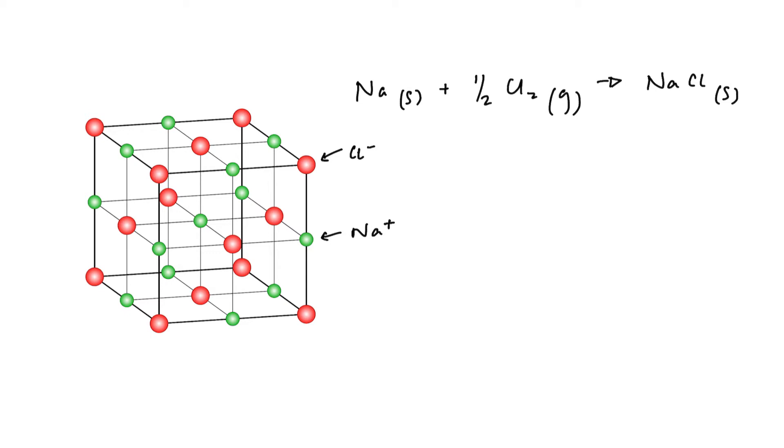And yet when we calculate the energy it takes to break up a lattice or the energy released when we form a lattice, sometimes the experimental and the theoretical values are very, very different. So in this video we are going to try and get to the bottom of why that might be, where is it that our model for an ionic lattice is not 100% up to scratch.